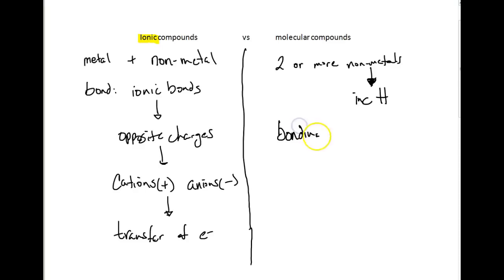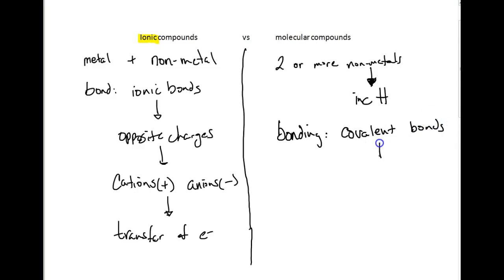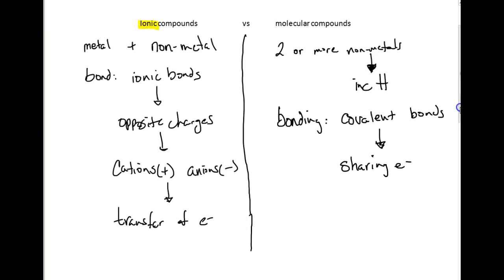The bonding that occurs in a molecular compound is called covalent. They form covalent bonds, and these covalent bonds are not due to a transfer of electrons — they're due to sharing electrons. We'll talk more about the sharing of electrons here pretty quickly.